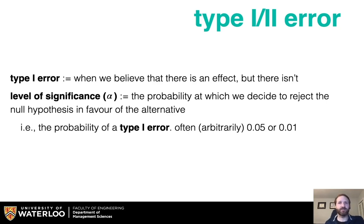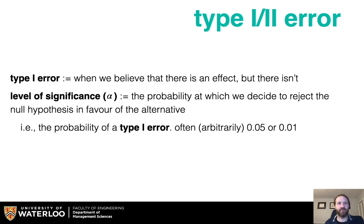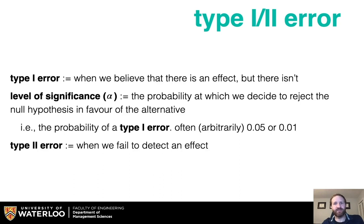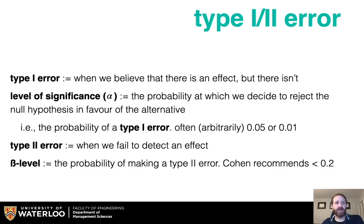These are very common values. They basically come from a historical note: a statistician created a table of values and couldn't fit everything in, so they chose values of 10%, 5%, and 1%, and then everyone adopted it. So think critically about your level of significance. A type 2 error is when we fail to detect an effect, and the beta level is the probability of making a type 2 error. Cohen recommends that beta be less than 0.2.